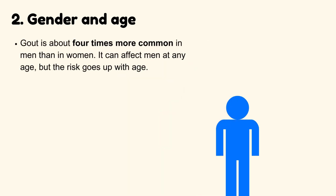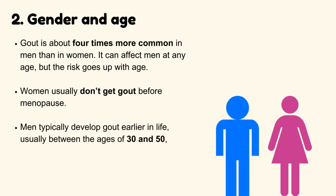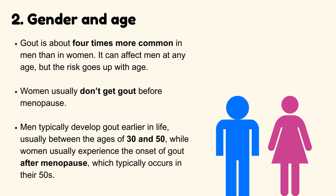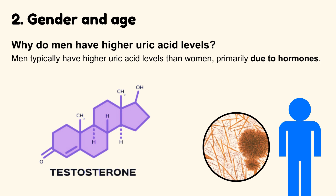Gender and age: Gout is about four times more common in men than in women. It can affect men at any age, but the risk goes up with age. Women usually don't get gout before menopause. Men typically develop gout earlier in life, usually between the ages of 30 and 50, while women usually experience the onset of gout after menopause, which typically occurs in their 50s.